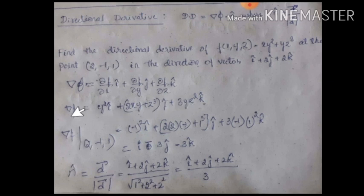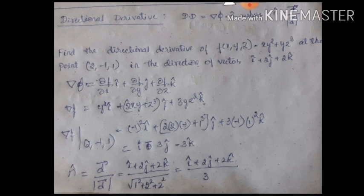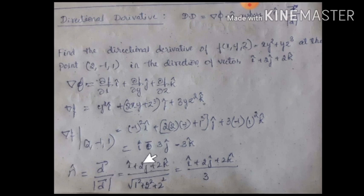Now substitute the particular point (2, -1, 1): set x=2, y=-1, z=1 into del f. The result is i cap minus 3j cap minus 3k cap. For the unit vector n cap, divide the given direction vector i cap plus 2j cap plus 2k cap by its magnitude. Magnitude equals square root of 1 squared plus 2 squared plus 2 squared, which is square root of 1 plus 4 plus 4 equals square root of 9, which is 3.